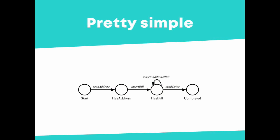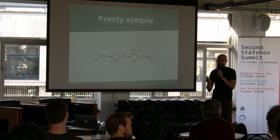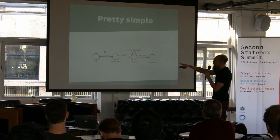A way to look at this, which might be familiar to programmers here, is with a state machine or a finite state machine. You're starting in the start state where the machine doesn't know anything. Since it's in the start state, you don't want to allow the machine to accept cash, because we need the Bitcoin address to know where to send the money. So we don't want to allow cash to be inserted until we have a Bitcoin address. The only thing you're allowed to do at this point is scan the address.